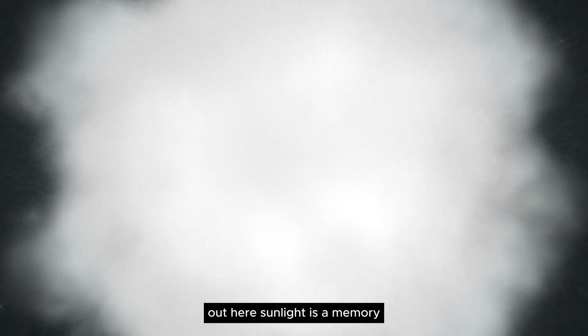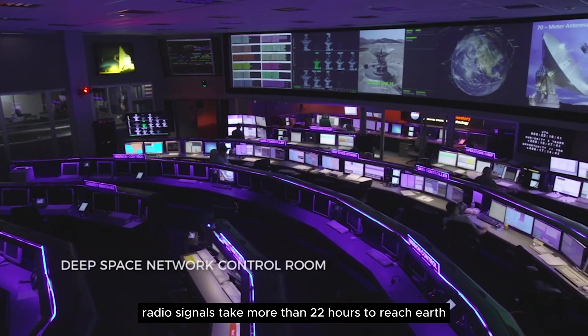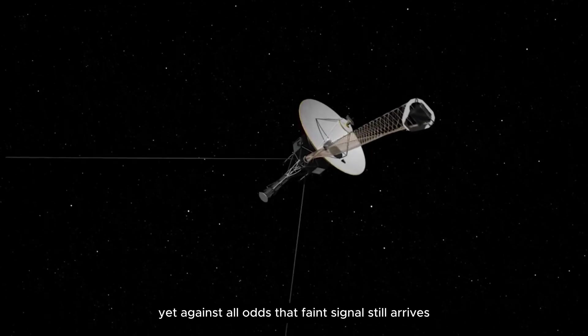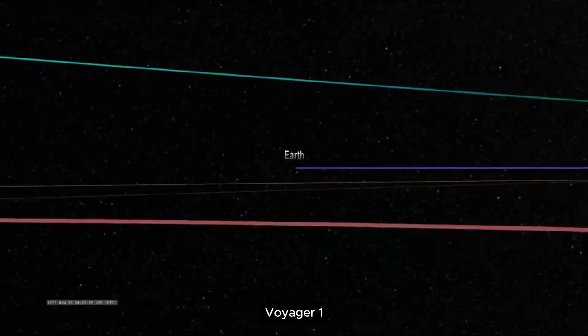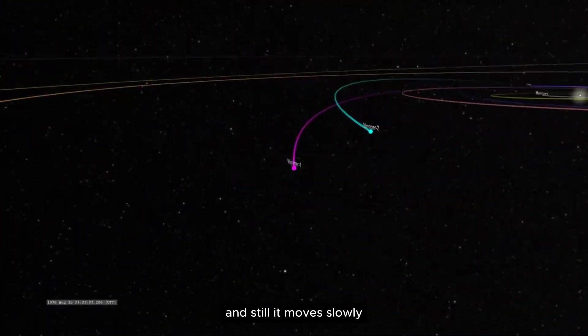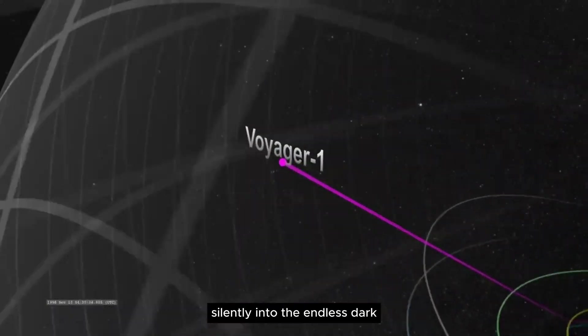Out here, sunlight is a memory. Radio signals take more than 22 hours to reach Earth. Yet against all odds, that faint signal still arrives, a heartbeat from humanity's farthest explorer. Voyager 1 has traveled farther than any object in history, and still it moves, slowly, silently, into the endless dark.